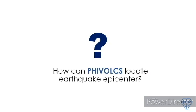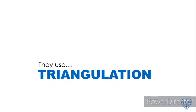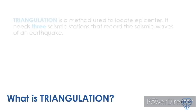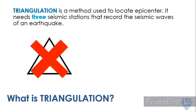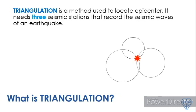Hi guys, Sir Eric here. So our question is, how can PIVOX locate an earthquake epicenter? The answer is they use triangulation. Triangulation is a method used to locate the epicenter. It needs 3 seismic stations that record the seismic waves of an earthquake. It came from the word triangle because it has 3 corners. However, it has nothing to do with a triangle — rather, it uses 3 circles that intersect at a single point.